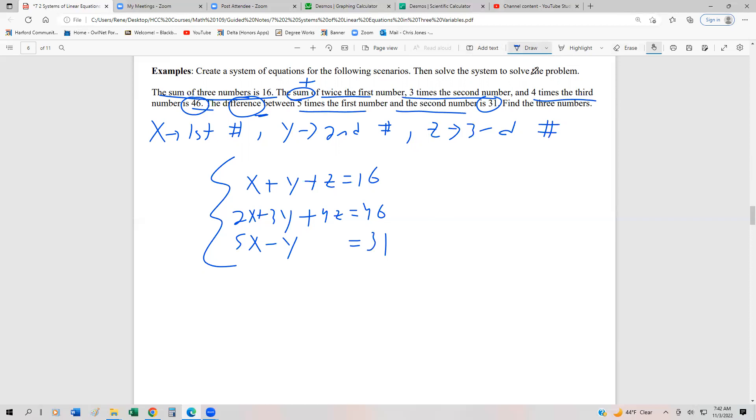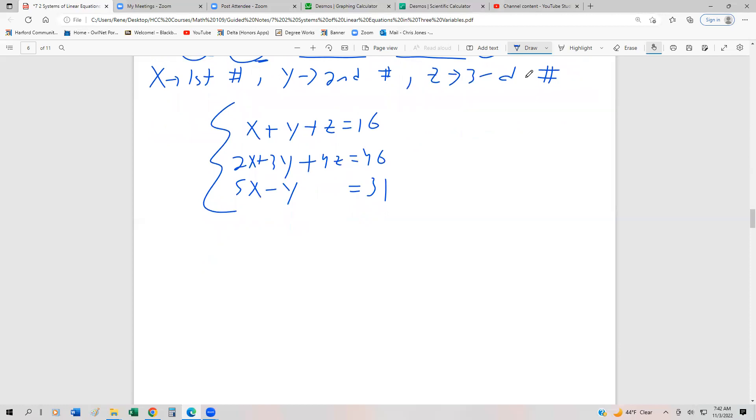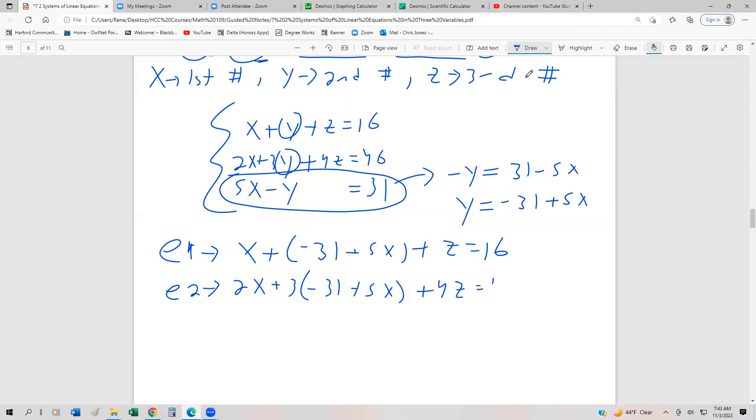Now, always solving these is a little bit nastier than it is being able to set it up. So what I'm going to do is I'm going to use that substitution method again. I'm just going to pick on the third equation. I'm going to subtract 5x from both sides. Solve for y. So negative y equals 31 minus 5x. And then if I divide by negative one, I get that negative 31 plus 5x is y. Now I'm going to substitute back in for y into equation one and equation two.